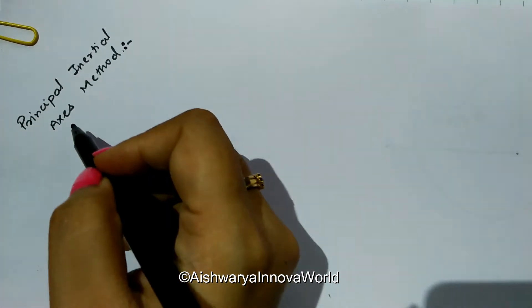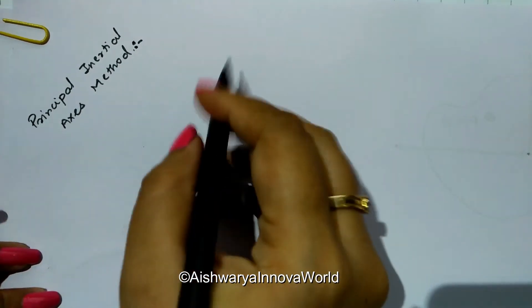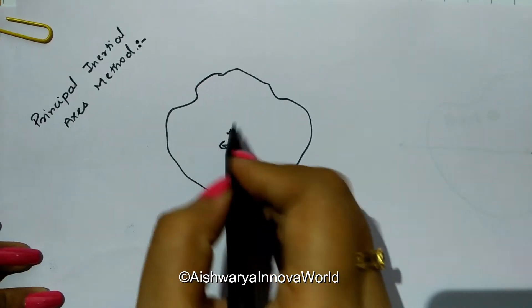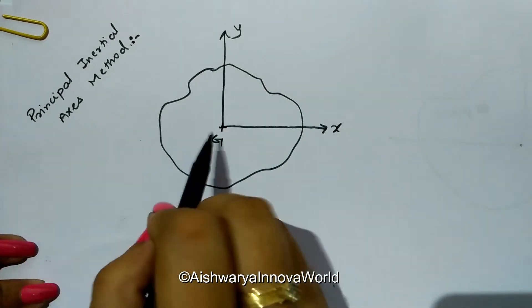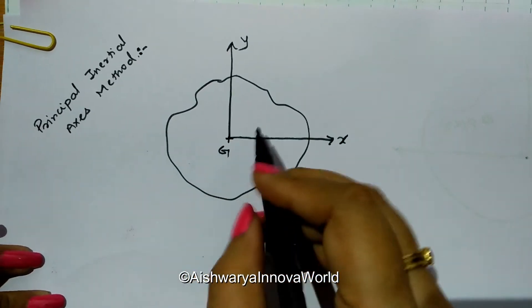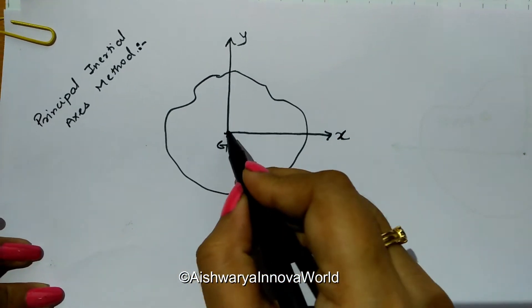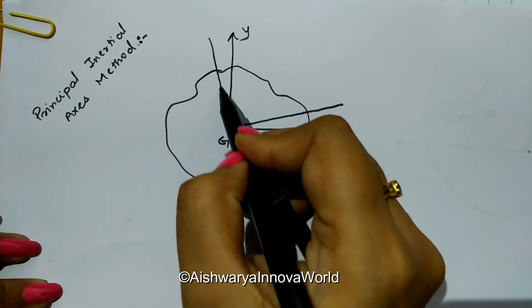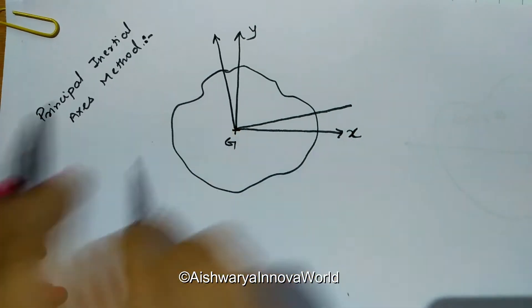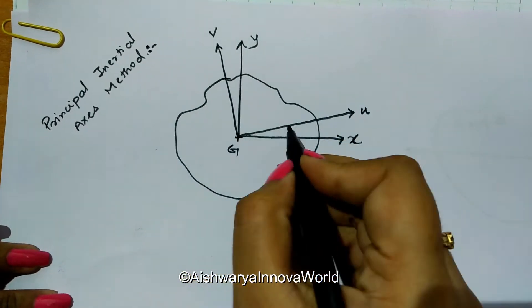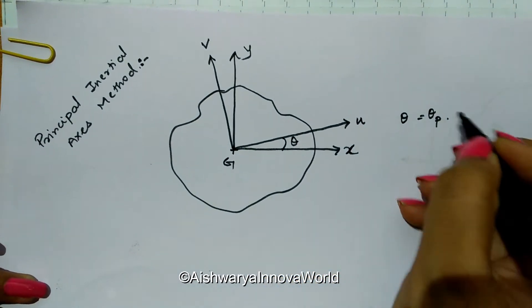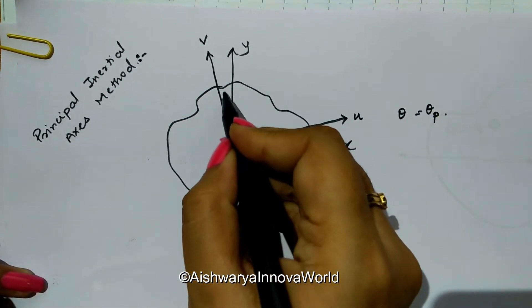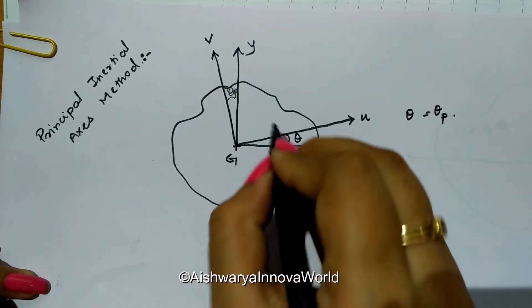We will use this method to find out the bending stress. Consider any cross-section surface, and on that surface, G is the centroid. From G, we have the x-axis and y-axis. In the principal inertia axis method, we take one more set of axes called the principal axes u and v, at an angle theta or theta_p from the original x and y axes.